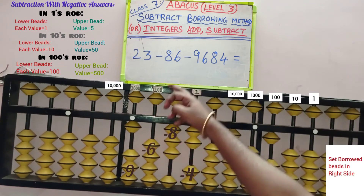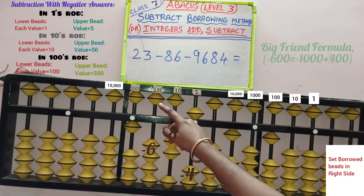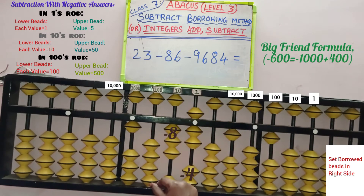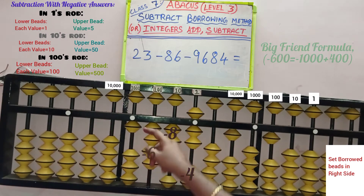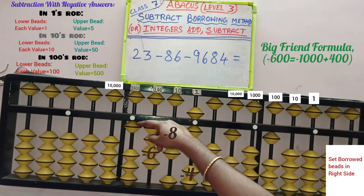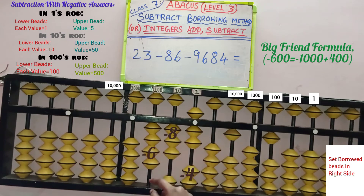Next, remove 6 beads from the 100's row. No beads are available here either, so apply big friend. 6's big friend is 4. Minus 6 means add 4 here and remove 1 bead from the next row which is the 1000's row. So minus 1,000 plus 400 equals minus 600 — completed.